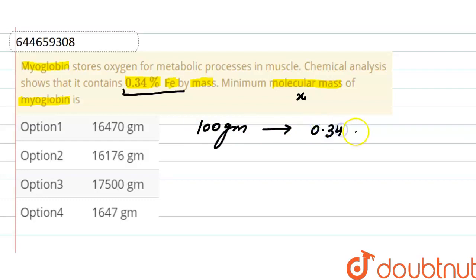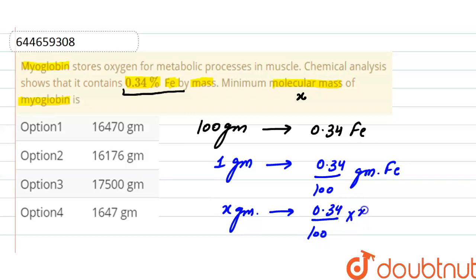And in one gram of myoglobin, 0.34 divided by 100 gram of iron is present. And in X gram of myoglobin, there will be 0.34 divided by 100 into X gram of iron is present.